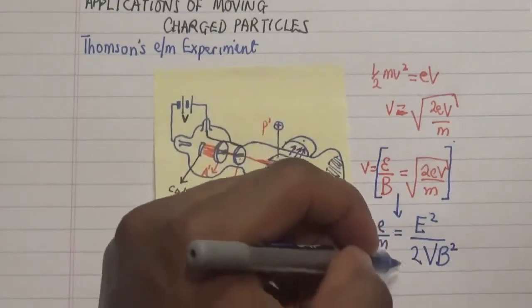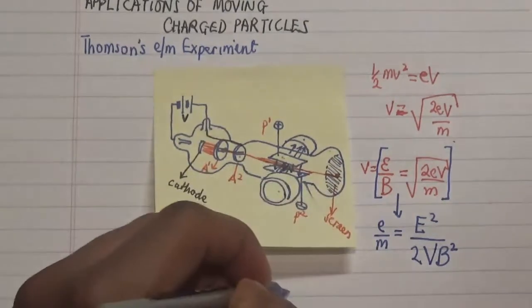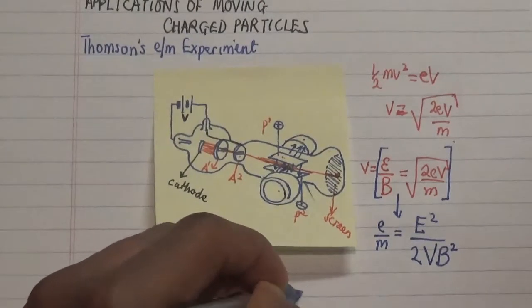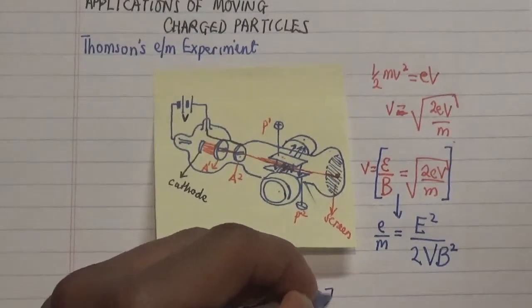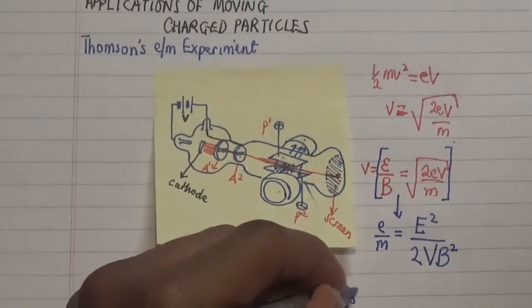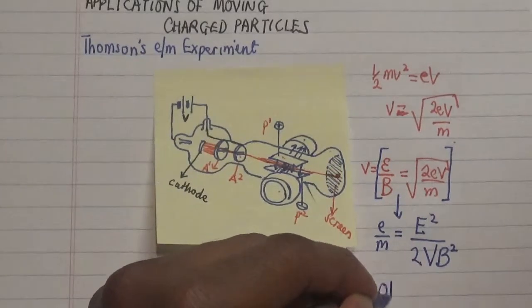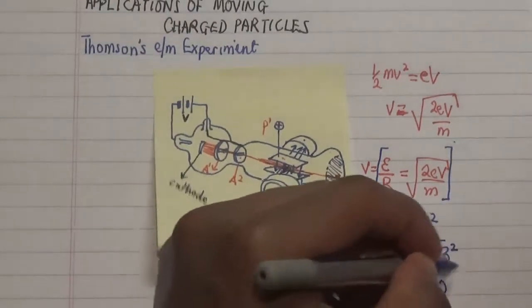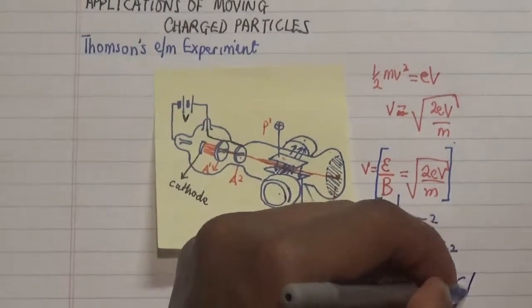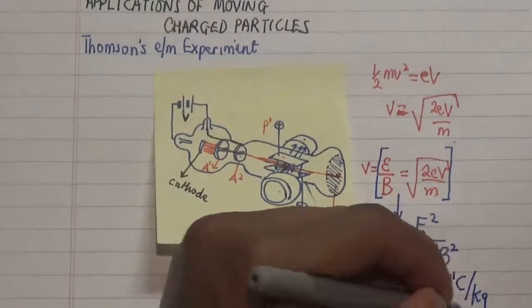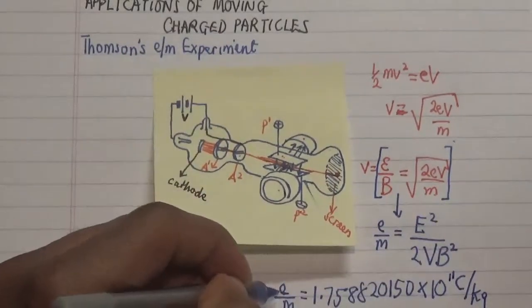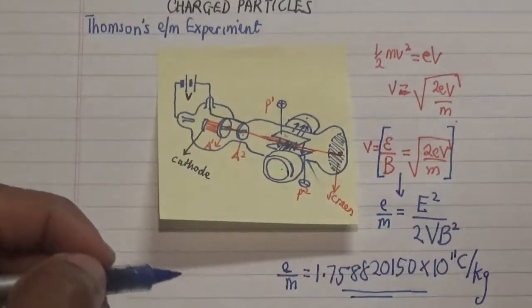So as a result of that, what we get is our number which is the charge to mass ratio to be equal to 1.758820150 times 10 to the power 11 coulombs per kilogram, which is our number for the charge to mass ratio of an electron.